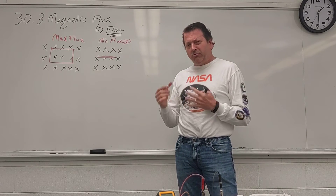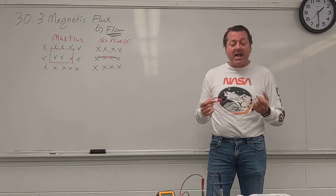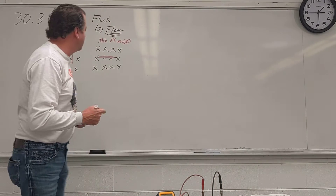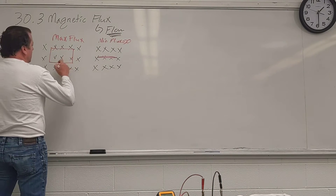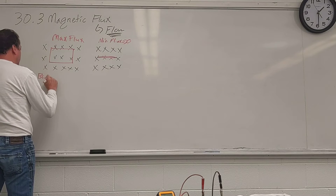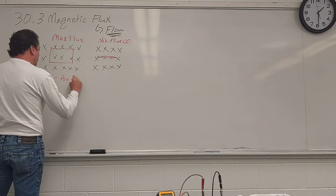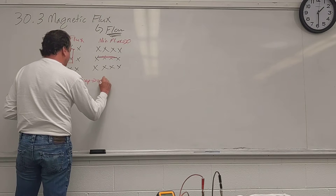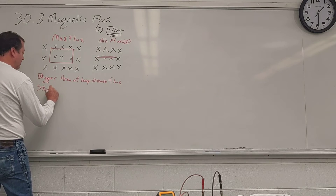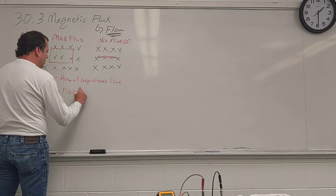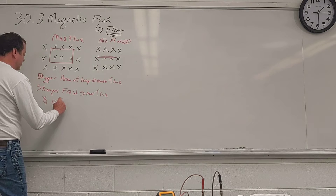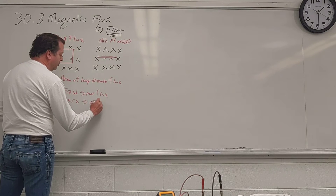Let's put some mathematics behind this. The bigger the area of the loop, the more the flux. The stronger the field — harder rain — the more the flux. And the angle matters for the amount of flux.